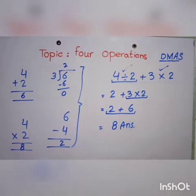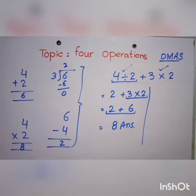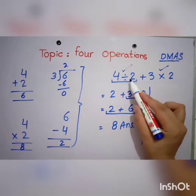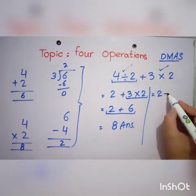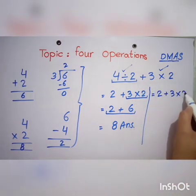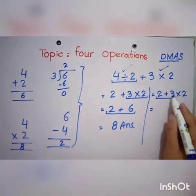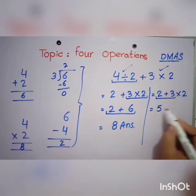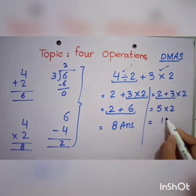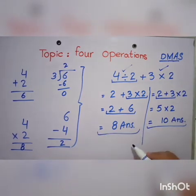But if we solve it just as the operations are given, our answer will be quite different. Like, 4 divided by 2 is equal to 2, then plus 3 multiply by 2. Now we add 2 and 3: 3 plus 2 is equal to 5, multiplied by 2 is equal to 10. So our answers are different.